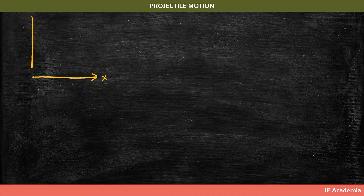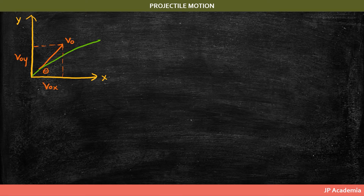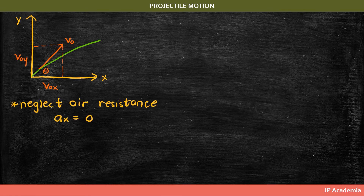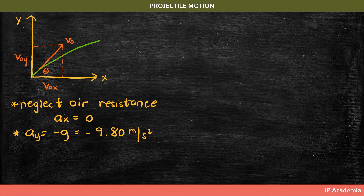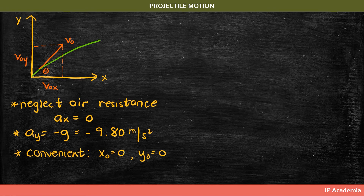We now consider an object flying through air with no other forces present except gravity and air resistance. As a first approximation, we will neglect the effect of air resistance and the possible variation in g, the acceleration due to gravity. If we neglect air resistance, there is no acceleration along the horizontal, so a sub x equals zero, while the acceleration in the y direction is only due to gravity, so a sub y equals negative 9.80 meters per second squared. We also assume the initial position x0 and y0 equal to zero at the origin.